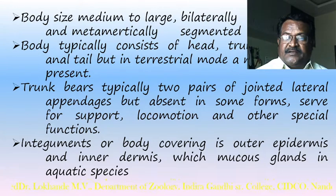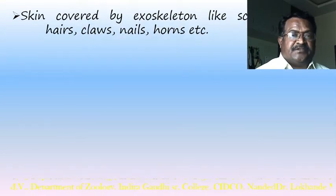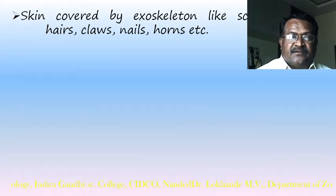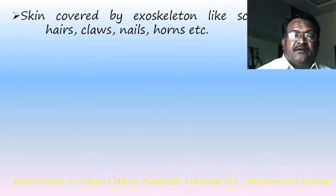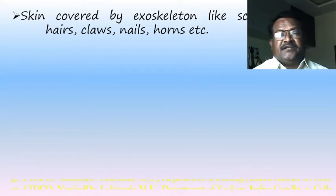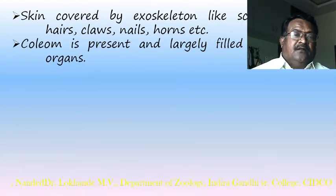The integument consists of an outer epidermis and inner dermis. Aquatic species have mucus glands for secretion. The skin is covered by exoskeleton structures such as scales in fishes, feathers in birds, hair in humans, claws in amphibia and birds, nails in humans, and horns in cattle.